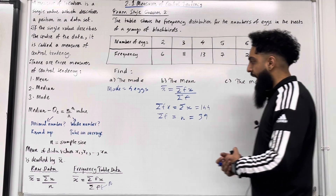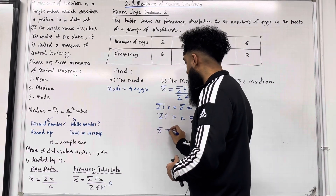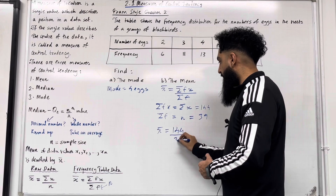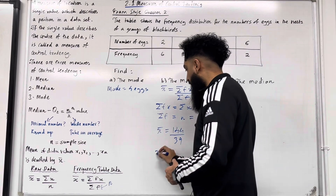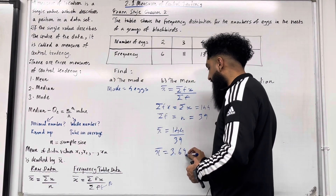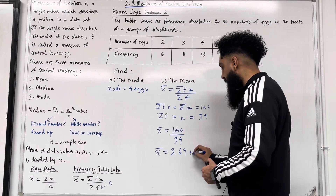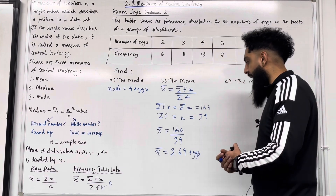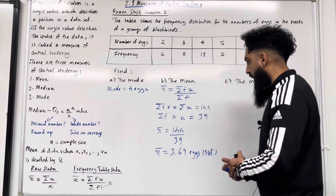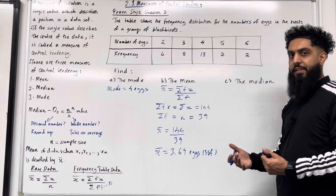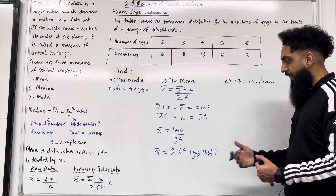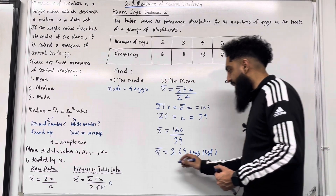Hence X bar, the mean, is equal to 144 divided by 39, which gives 3.69 to 3 significant figures. However, 3.69 eggs is not a sensible answer because you can't have 3.69 eggs, so a sensible answer would be 4 eggs.